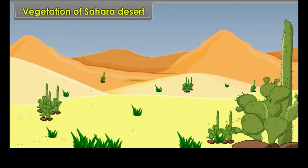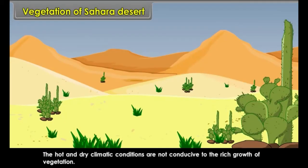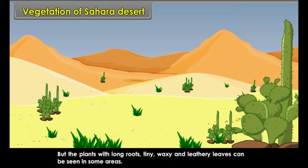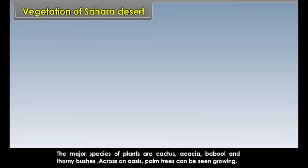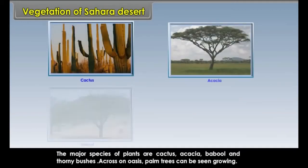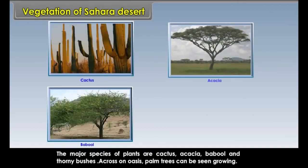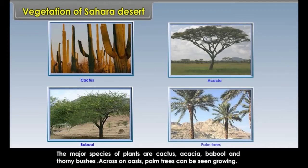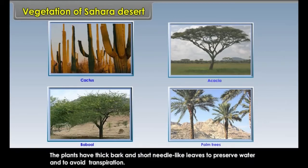Vegetation of Sahara Desert. The hot and dry climate conditions are not conducive to rich vegetation growth. However, plants with long roots, tiny, waxy and leathery leaves can be seen in some areas. The major species of plants are cactus, acacia, babool, and tawny bushes. Across an oasis, palm trees can be seen growing. The plants have thick bark and short needle-like leaves to preserve water and avoid transpiration.